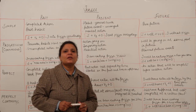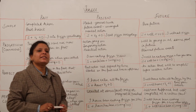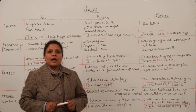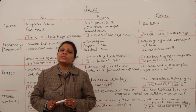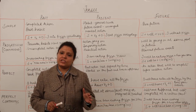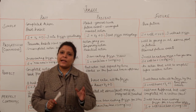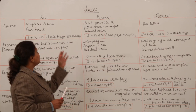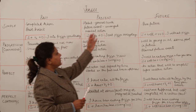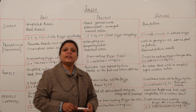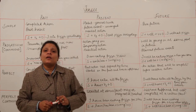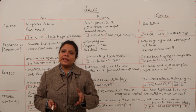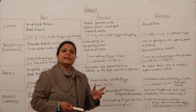Dear students, today we will study the tenses. English language divides the time of an action — that is the time of a verb — into three broader parts: past, present, and future. We can decide when the action was taking place and accordingly assign it a tense.